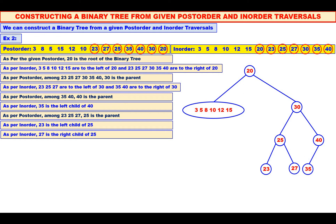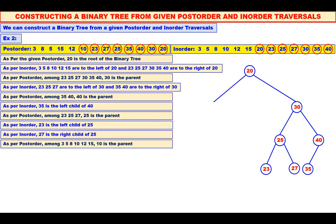Now the right sub-tree is completely over. Let us come to the left sub-tree. Among 3, 5, 8, 10, 12, 15, which is the root? See the post-order — 10. So 10 is the root. Mark it in the inorder as well. 3, 5, 8 are to the left of 10, and 12, 15 are to the right of 10. Therefore, 3, 5, 8 should be in the left sub-tree of 10 and 12, 15 should be in the right sub-tree of 10.